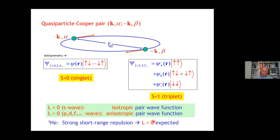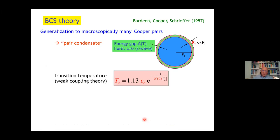L larger than zero is good for helium-3, because then the pair wave has a node at R equal to zero, in the middle of this pair, which cuts out the interaction region.